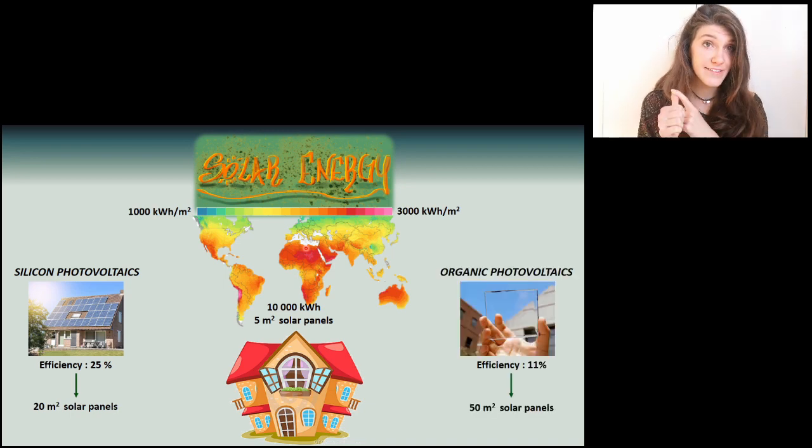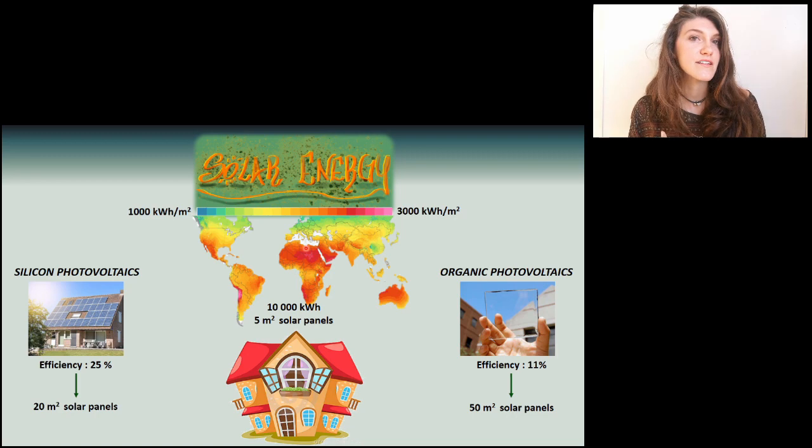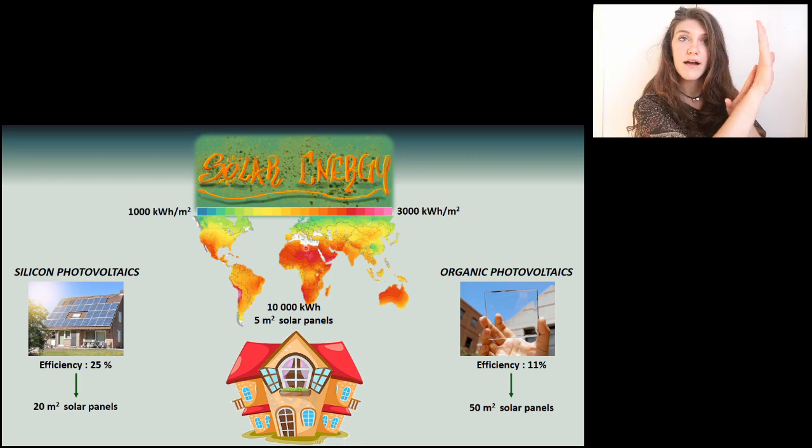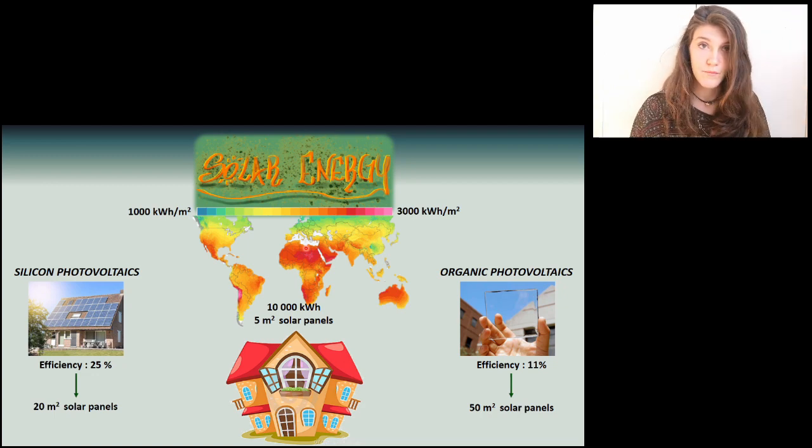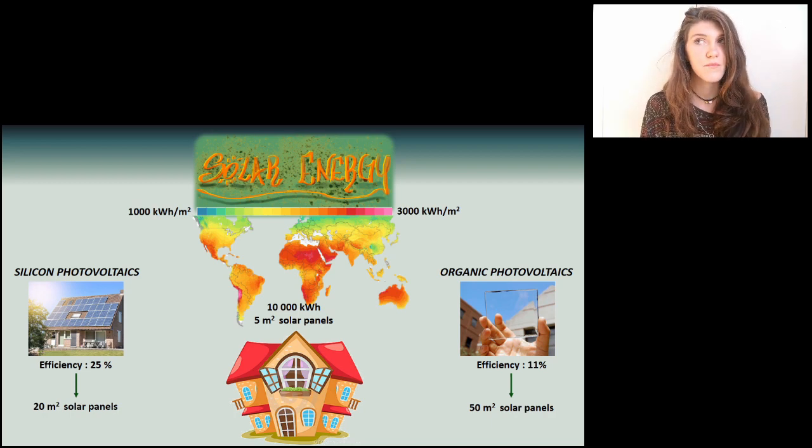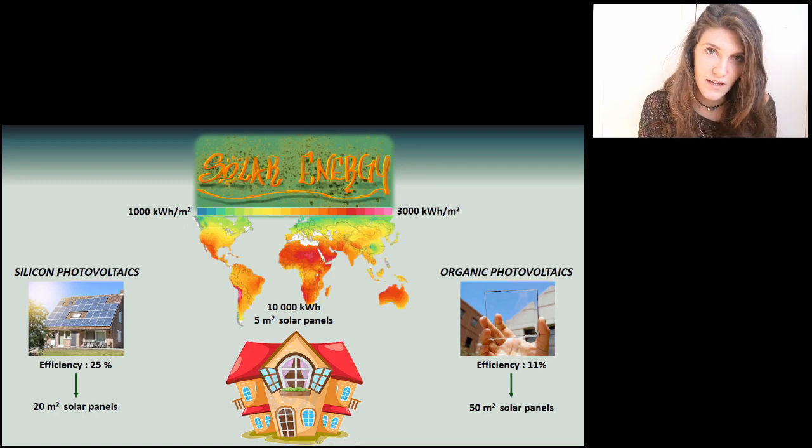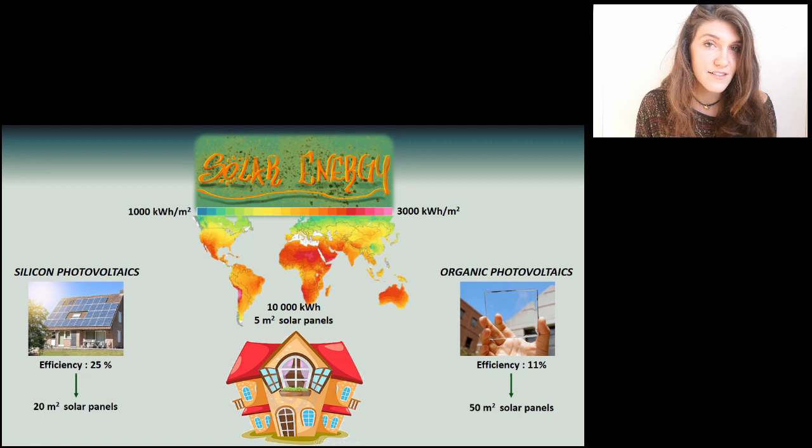These systems are lighter, more environmental friendly and transparent, so you can use them in the windows, and you would have nice windows and at the same time you would produce energy. So they have a big problem anyway, that their efficiency is really low and close to 10%. So my question is, is there a way, and in case, which one, to increase this efficiency?